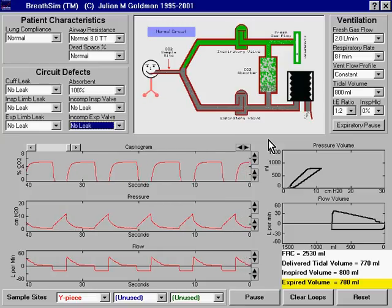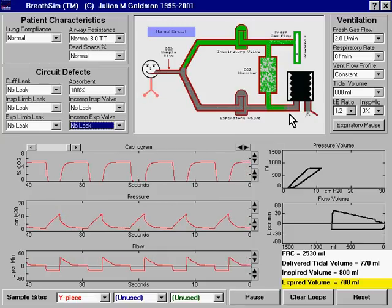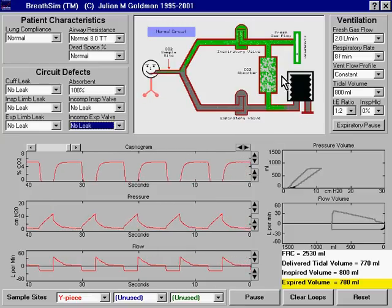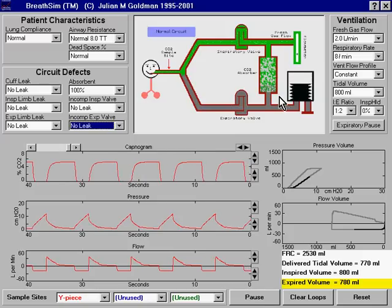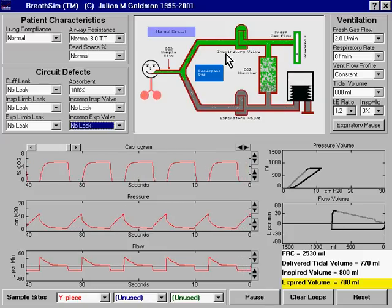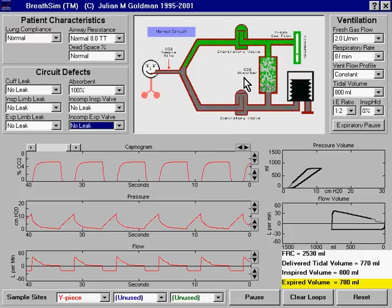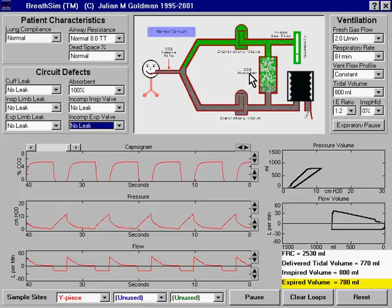Normally during inspiration, the ventilator bellows descends and pushes the gas through the CO2 absorber and into the inspiratory limb. The CO2 absorber removes CO2 from the previously exhaled gas.